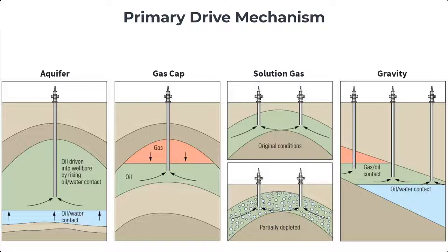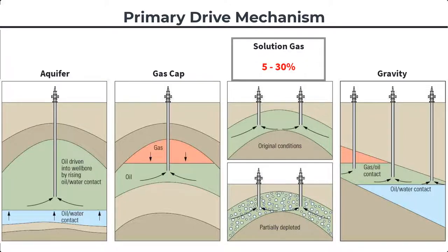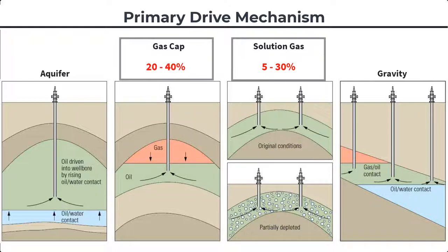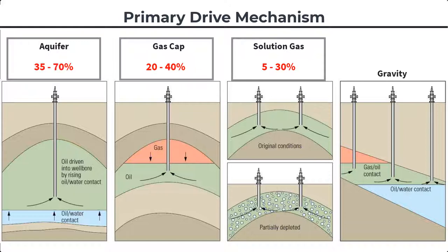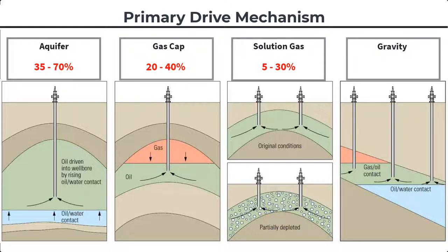We can have a couple of drive mechanisms: solution gas drive, where gas is dissolved in oil; a gas cap of free gas; aquifer or water influx; gravity drive; and sometimes a combination of at least two of these. For a solution gas drive you can recover up to 5–30% of original oil in place. A gas cap drive gives about 20–40%, water drive has the highest at 35–70%, and gravity drive is the lowest at about 5–25%.